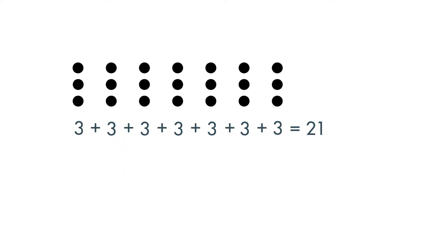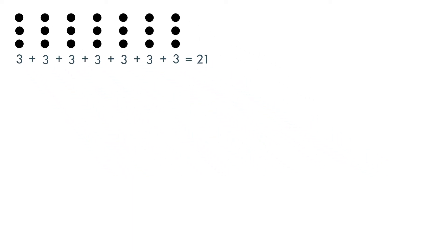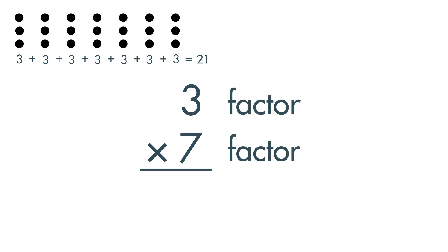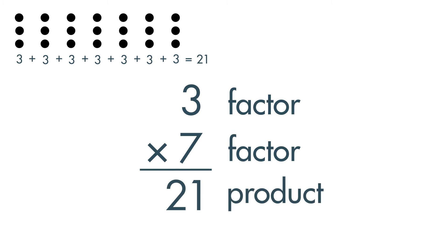Another way to solve the problem is to multiply 3 times 7. 3 and 7 are factors. To multiply, think about how we solved the problem using repeated addition. There are 21 dots in 7 groups of 3. 21 is the product.